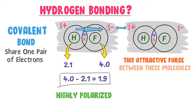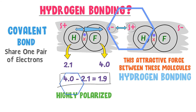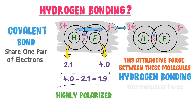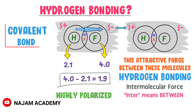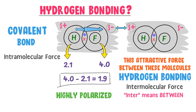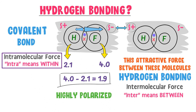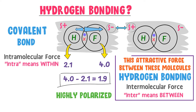This attractive force between the two molecules is called hydrogen bonding. So hydrogen bonding is not a chemical bond — it is intermolecular forces between molecules. The word 'inter' means between. Also remember that covalent bond is an intramolecular force — 'intra' means within — so a covalent bond is a force within atoms. Hydrogen bonding is the attractive intermolecular force between highly polarized molecules like hydrogen fluoride.